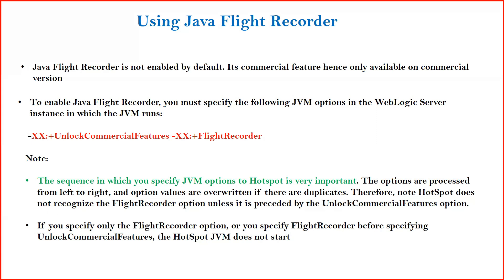Sometimes we don't care about the order of parameters specified in the JVM, but specifically for this feature you must first mention -XX:+UnlockCommercialFeatures and second -XX:+FlightRecorder. If you reverse the order it will not work. Also, if you omit any one parameter — for example if you specify only FlightRecorder without UnlockCommercialFeatures — your JVM will not start and it will give you exceptions. So make sure both parameters are enabled in your JVM always.